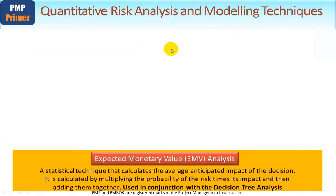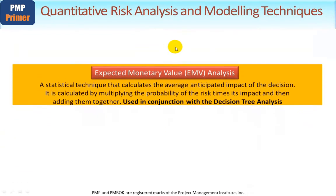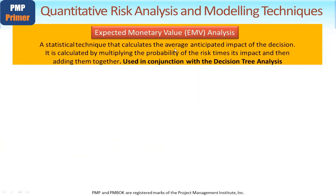Let's look at expected monetary value analysis, known as EMV. It's a statistical technique that calculates the average anticipated impact of a decision. It is calculated by multiplying the probability of the risk times its impact and then adding them together, used in conjunction with decision tree analysis.